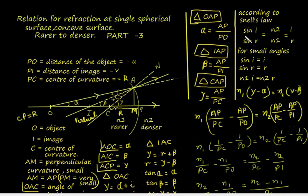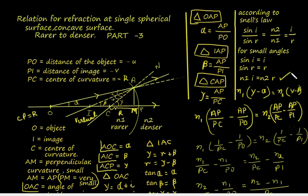Coming to Snell's law: sine i by sine r equals N2 by N1. For small angles, sine i equals i and sine r equals r. Therefore i by r equals N2 by N1, giving the expression N1·i equals N2·r.